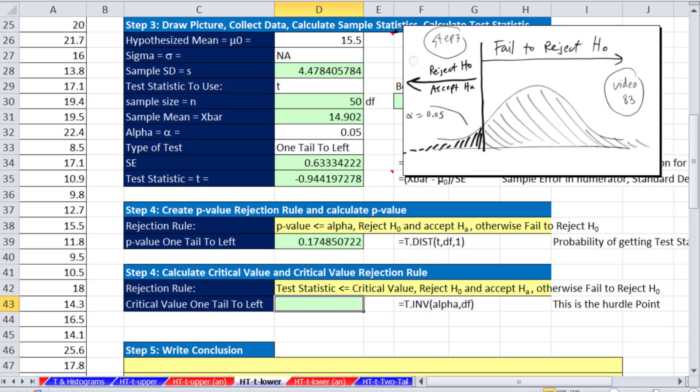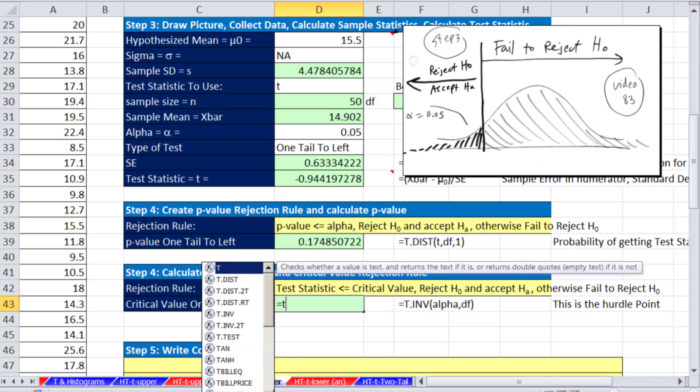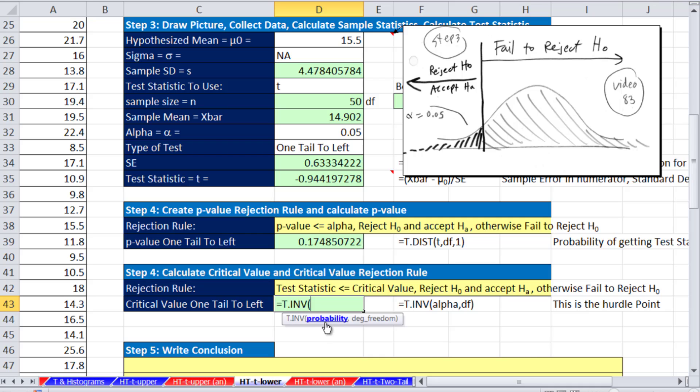Using our critical value, we use our T dot inverse, and we have our probability. We want the marking point, the hurdle, so we slap in our alpha, and what's nice about the low end is you just negative infinity up to that point is exactly 0.05 comma our degrees of freedom. So minus 1.67, so clearly we can see that test statistic is bigger than this, meaning it's on this side. So let's look at a picture.